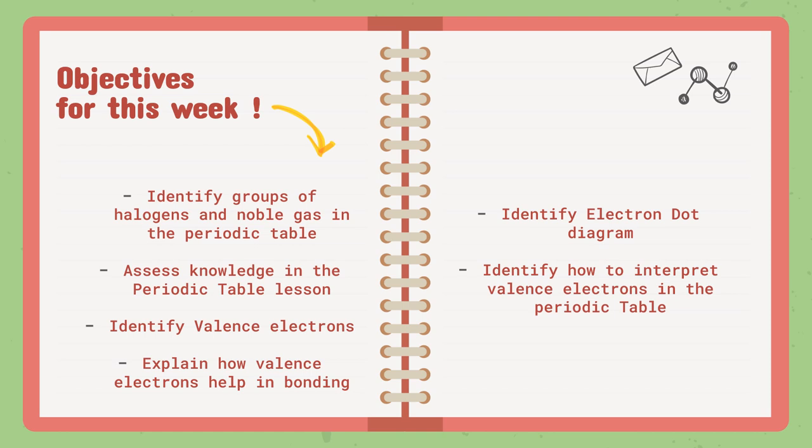We will find out in this chapter. And then we are going to identify electron dot diagram. By saying a diagram, this means we are going to draw something. So, we are going to understand how we can draw the electron dot diagram and what it means.